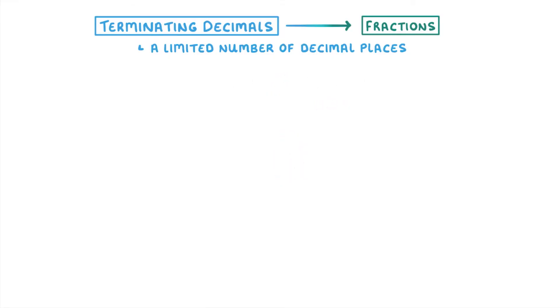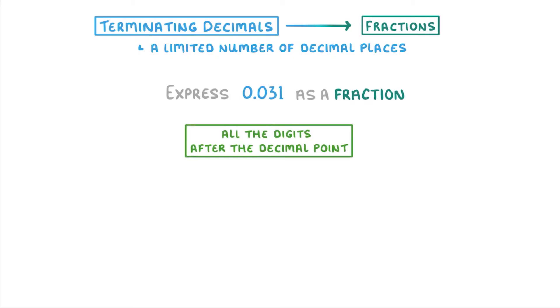As a slightly harder one, let's try to express 0.031 as a fraction. The first thing we're going to do is take all the digits after the decimal point, so 0, 3, 1, and put that as our numerator.